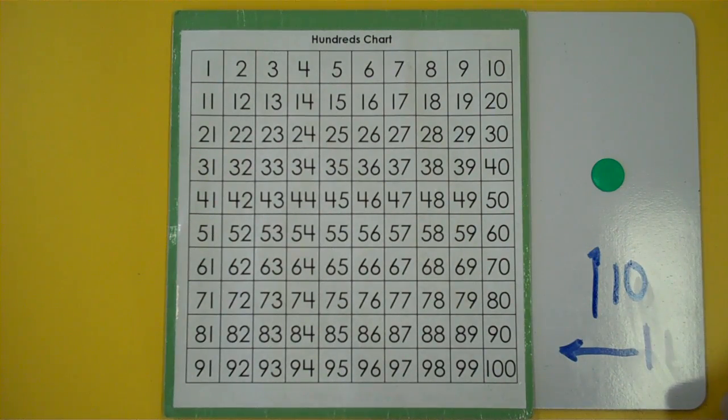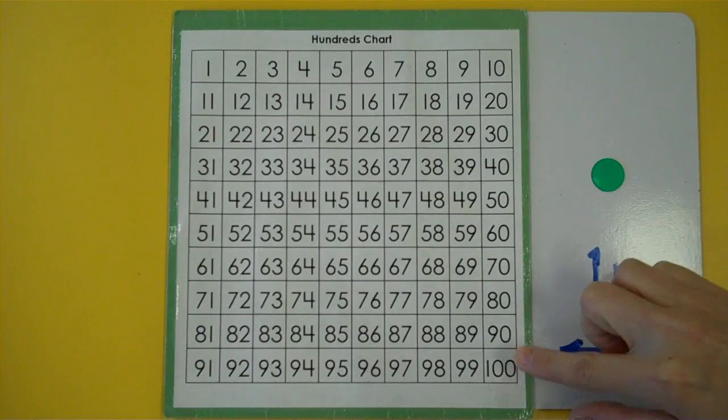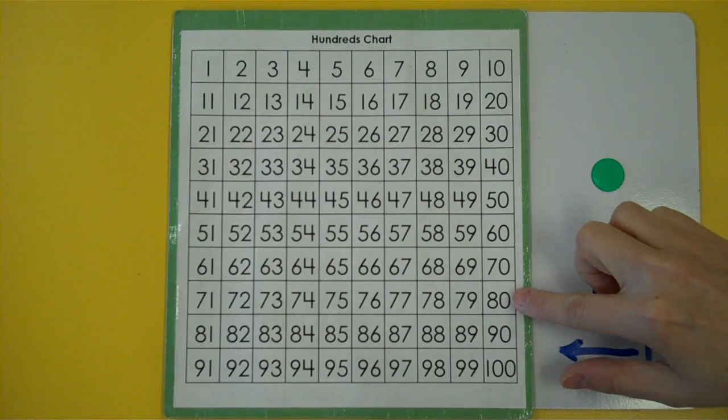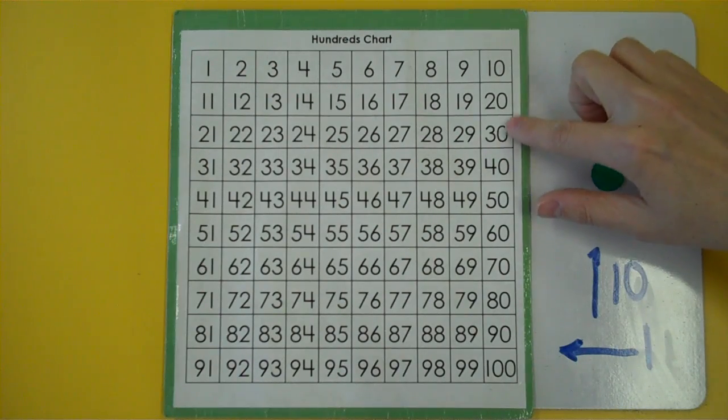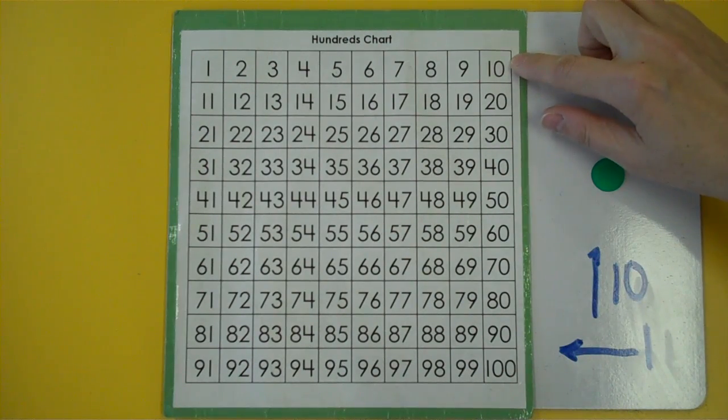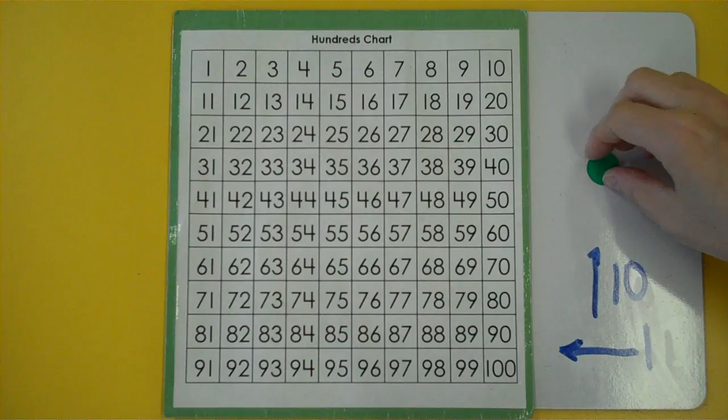If I were to count backward by tens starting at 100 I could do it along the hundreds chart. 100, 90, 80, 70, 60, 50, 40, 30, 20, 10. So if I'm subtracting on the hundreds chart I'm either moving to the left or I'm moving up.